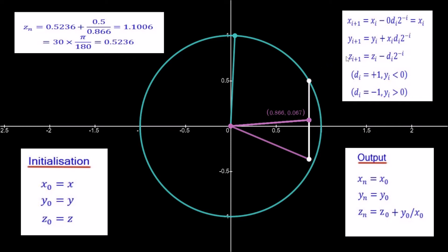For z2, we take z1 which is 87.29 degrees and subtract d1 times 2 to the minus 1. Since d1 is plus 1 and 2 to the minus 1 is one half, we subtract half of one radian, which is 28.64789 degrees. So z2 equals 87.29 minus 28.648, giving approximately 58 degrees.